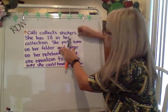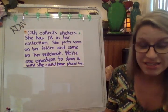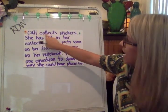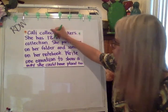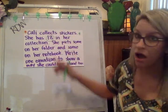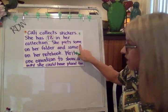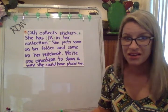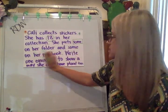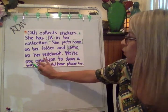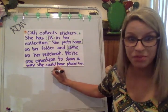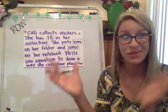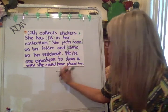Let's do another one. Some of these are going to have multiple steps; some are going to be a little easier. Callie collects stickers — she has 18 in her collection. And when I see numbers, I always like to circle them. She puts some on her folder and some on her notebook. When I see the word 'some,' I think of it like a box — an unknown. We know the whole number she has is 18, so I'm going to write that at the top.